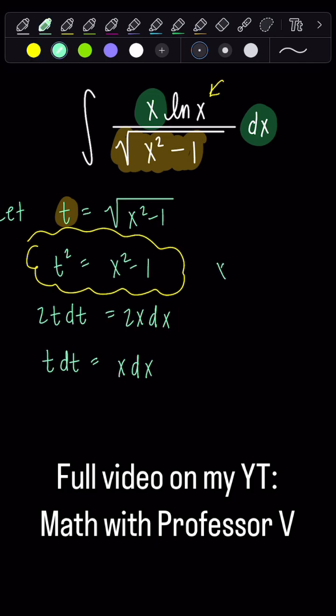So that means x squared equals t squared plus 1, and so x equals plus or minus the square root of t squared plus 1.